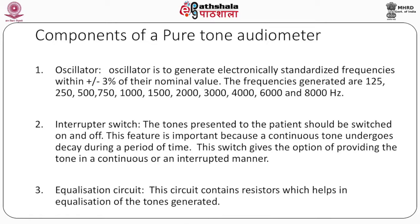Now, components of a pure tone audiometer. First is the oscillator, which generates electronically standardized frequencies within plus or minus 3% of their nominal value. The frequencies generated are 125, 250, 500, 750, 1000, 1500, 2000, 3000, 4000, 6000, and 8000 hertz.